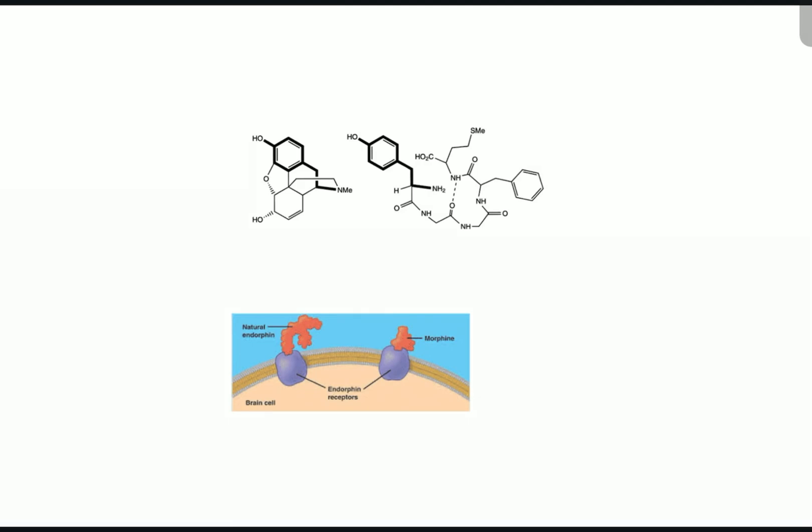These endorphins reduce our sensation of pain, affect mood, and reduce the sensation of hunger and thirst. Morphine and natural endorphins have a somewhat similar shape, so morphine binds to the same endorphin receptors. In a way, morphine is an agonist.